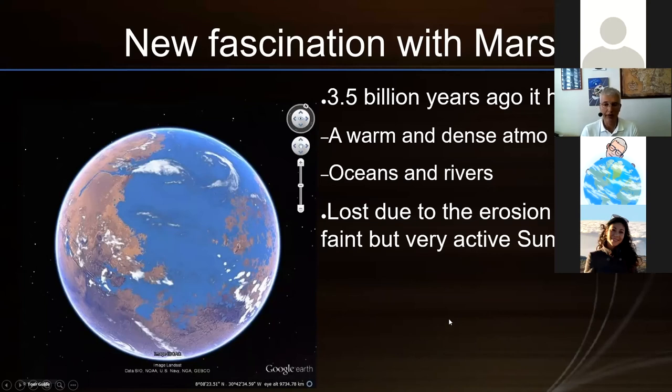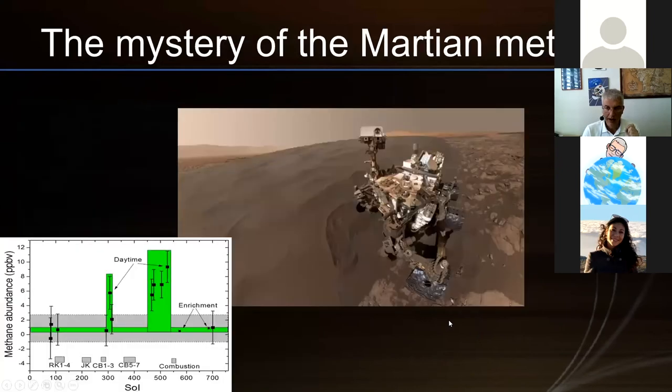Mars was a very hospitable place 3.5 billion years ago. Plus, we have learned that the reason why everything changed is because of solar activity. Mars does not have the magnetic field that the Earth has. This is a very recent discovery from two years ago. Without that protection, the solar wind and solar storms ripped apart the Martian atmosphere. And without an atmosphere, all the water evaporated. That's how it became the dry desert that it is today.